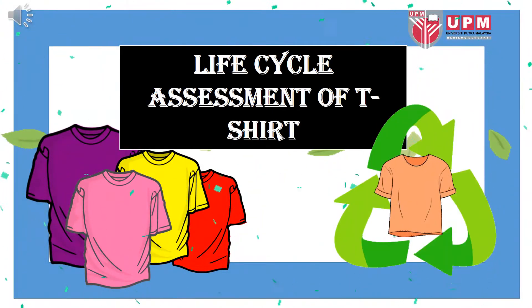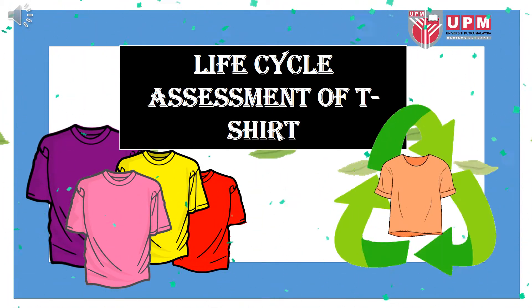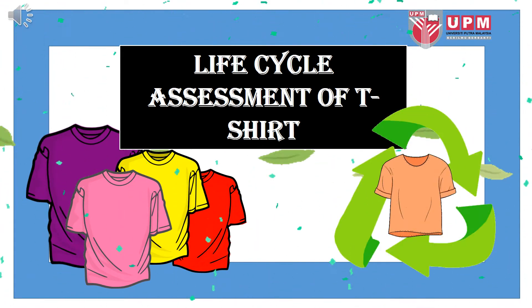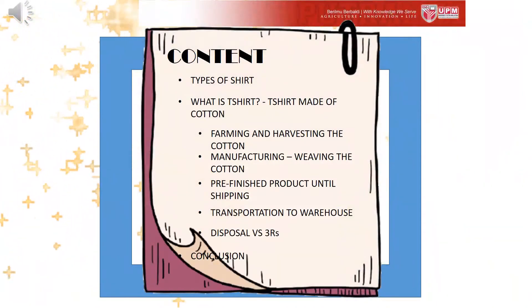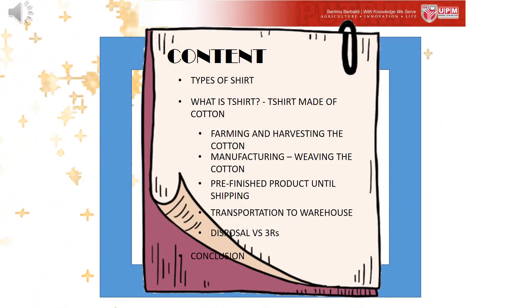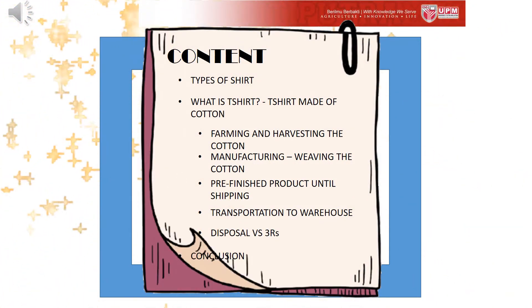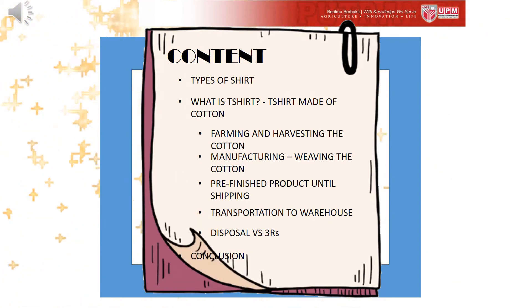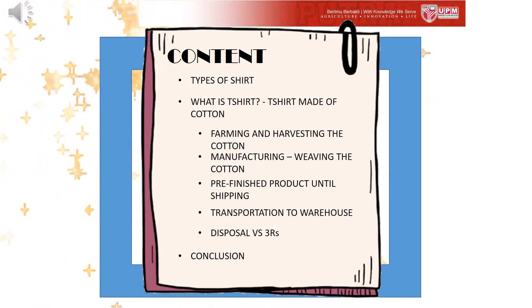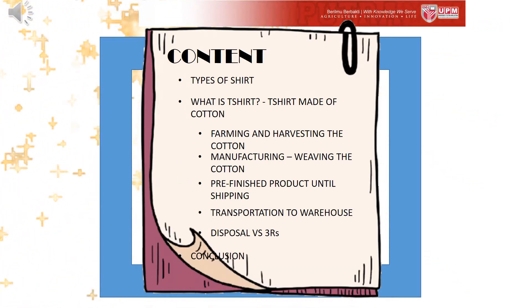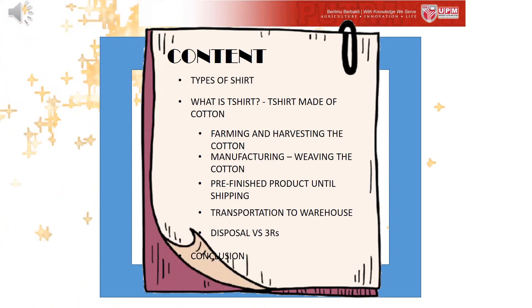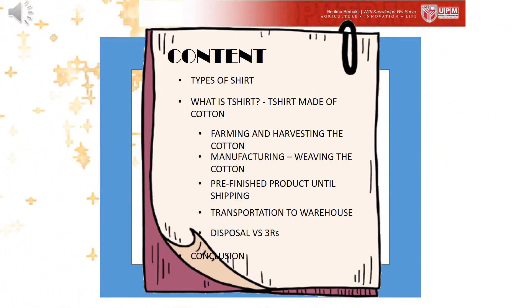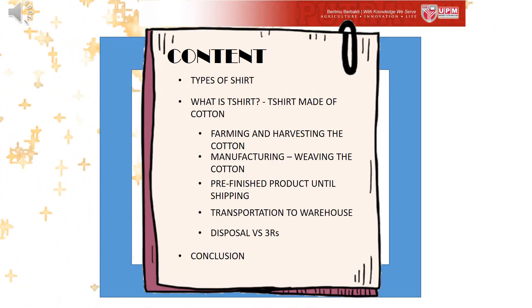Hello, welcome to Life Cycle Assessment of T-shirt. Let's take a look at the contents. In this video, we will look at the introduction including the types of shirts and what is the t-shirt, then move to the life cycle of t-shirt that consists of five main phases: farming and harvesting, manufacturing, shipping, warehouse and retail, and disposal versus recycling.